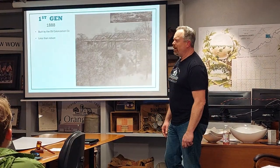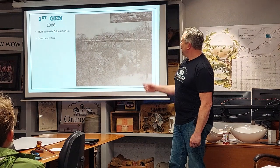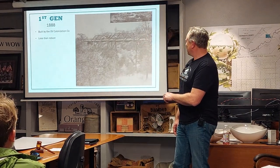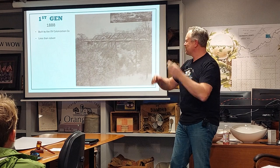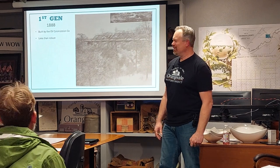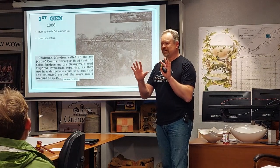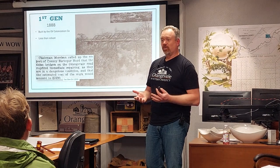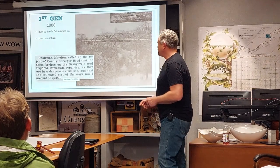First generation, 1888. They needed bridges to get over to Folsom to get fruit to market. Looking at the picture, they were less than robust — we have three kind of stick support beams with a little bit of support on top, almost like a Lego erector set. I wouldn't be very excited about crossing that bridge. Ten years after they built it, they were already talking about condemning it — not a shining moment for the Orangevale colonization company.